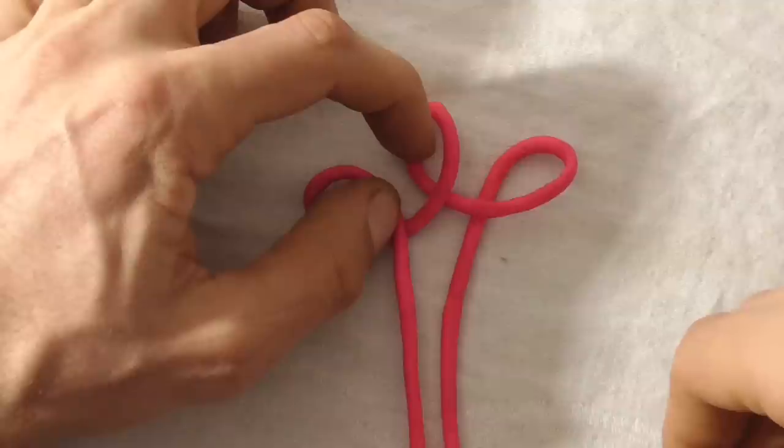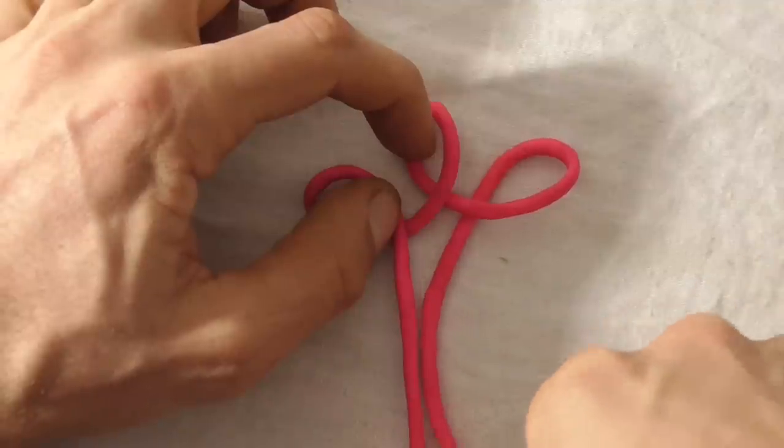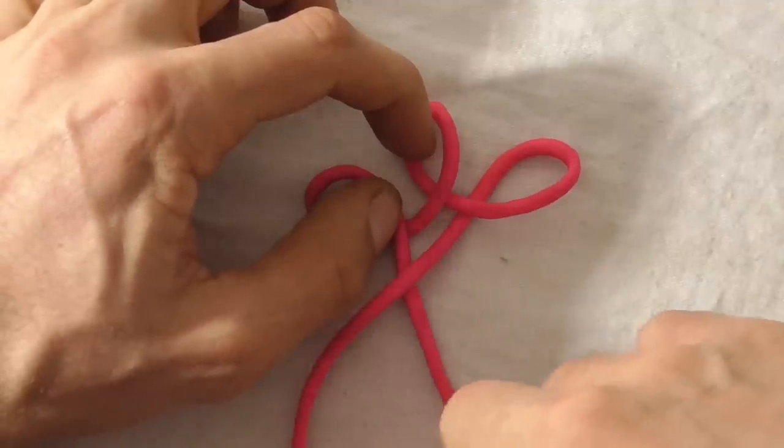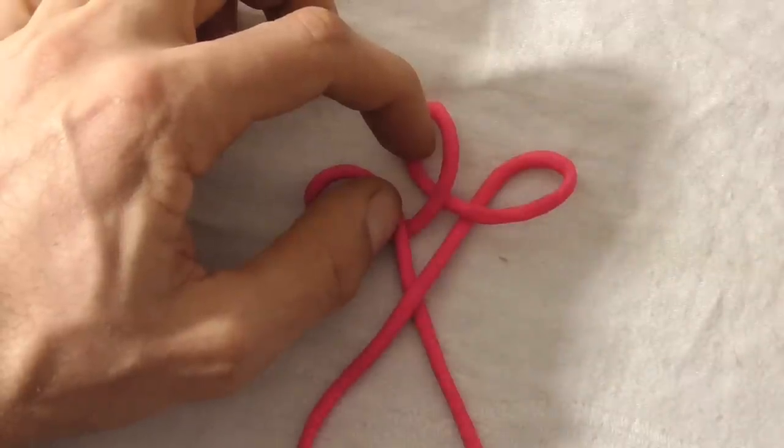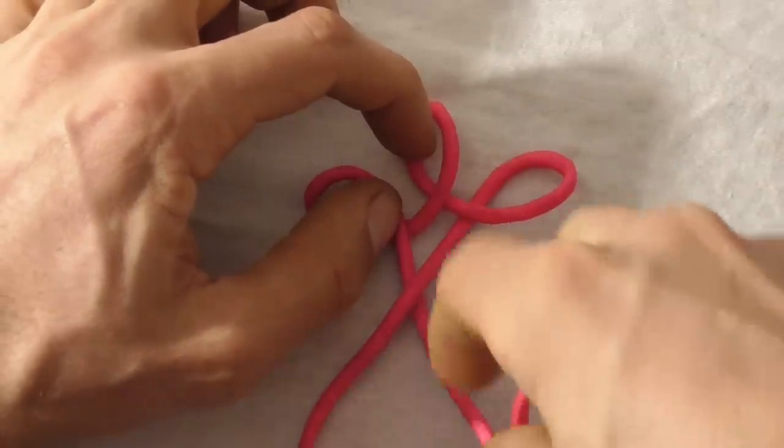I just want to cross these loops over. The right side on top of the left. Then I'll locate the end.